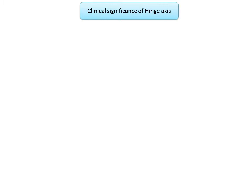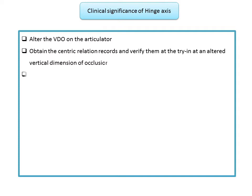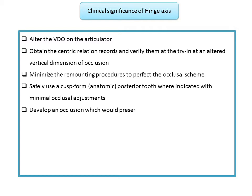What is the significance of hinge axis recording? It can help in altering the vertical dimension of occlusion on the articulator. It can aid in obtaining centric relation records and verifying them at try-in at an altered vertical dimension of occlusion. It can aid in minimizing remounting procedures to perfect the occlusal scheme, and in safely using cusp-form or anatomic posterior teeth where indicated with minimal occlusal adjustments, to develop an occlusion that preserves and restores oral function.